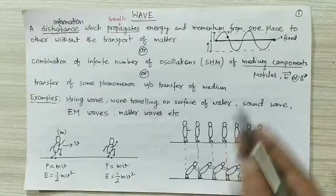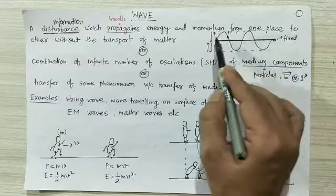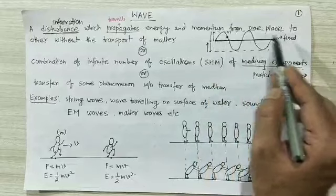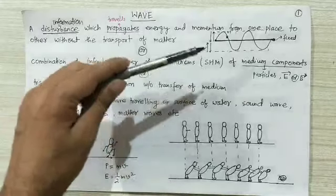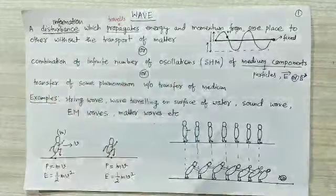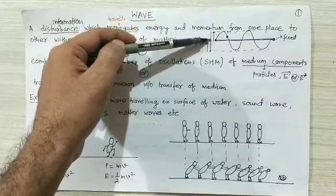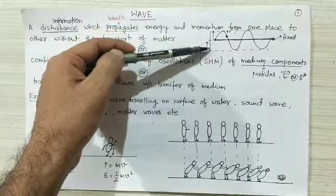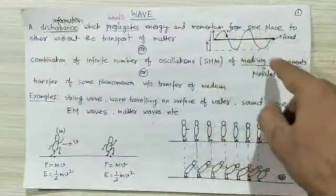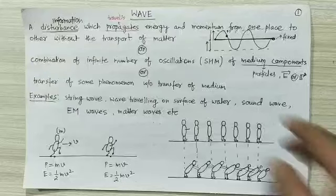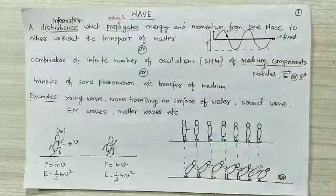Consider an example: suppose we have a string fixed at one end, with the other end free. I am doing simple harmonic motion to the free end — first taking it up, then down, then again down, then again up, continuously. Then what happens? A wave will generate on the string, and this wave is called a string wave.